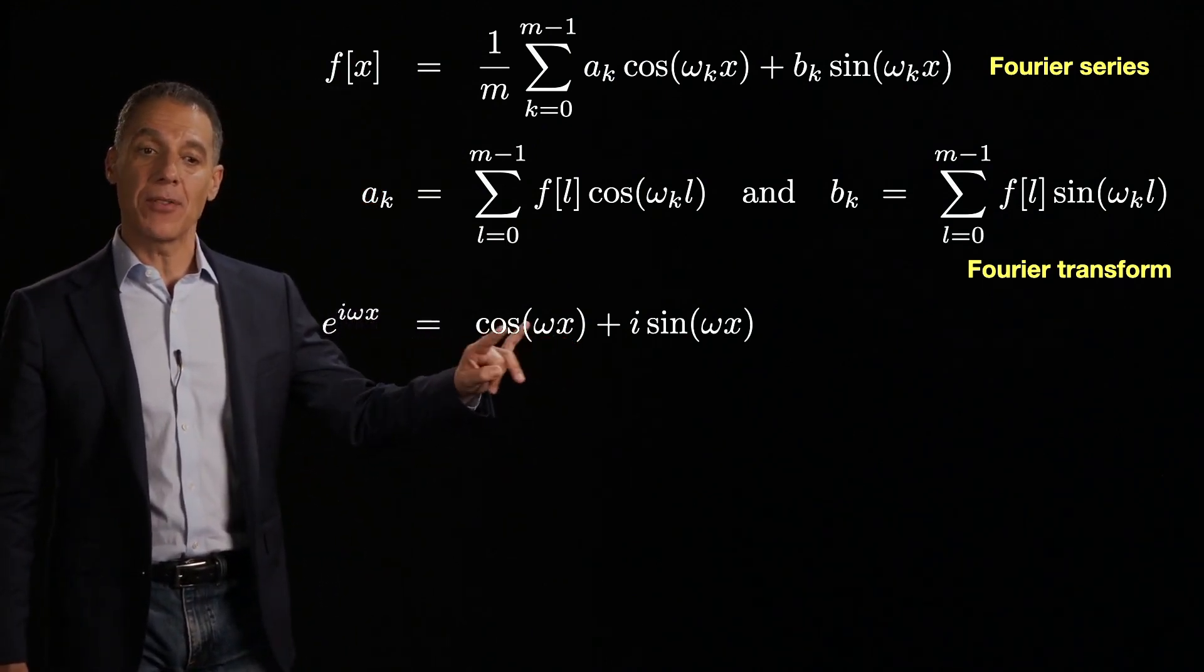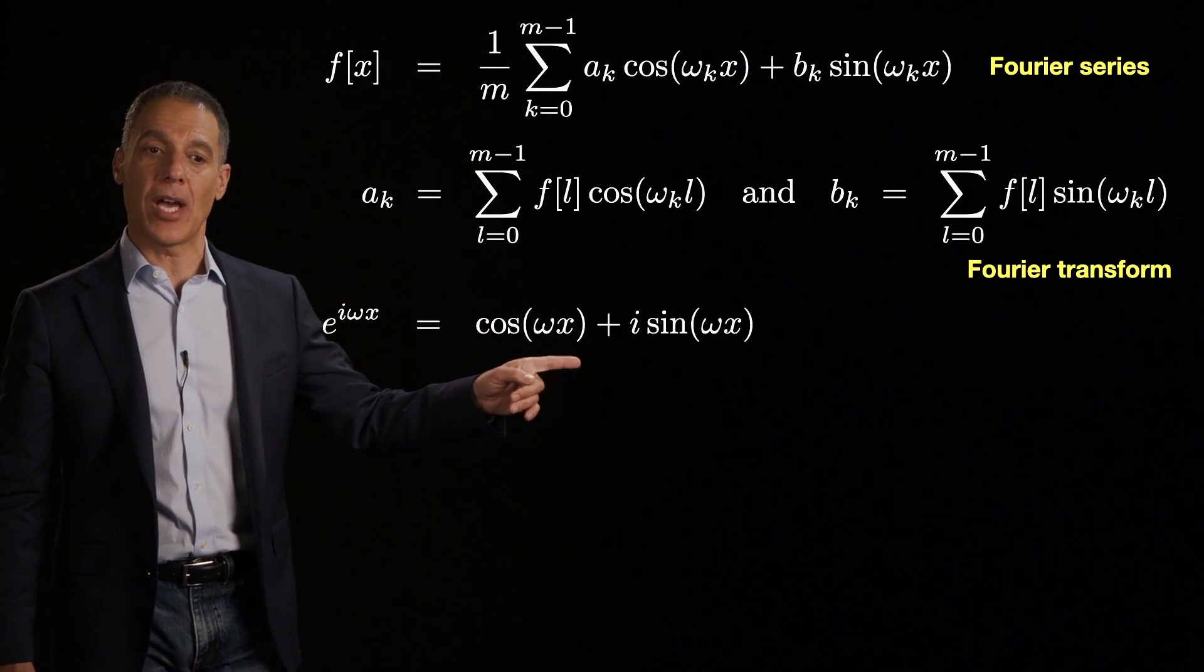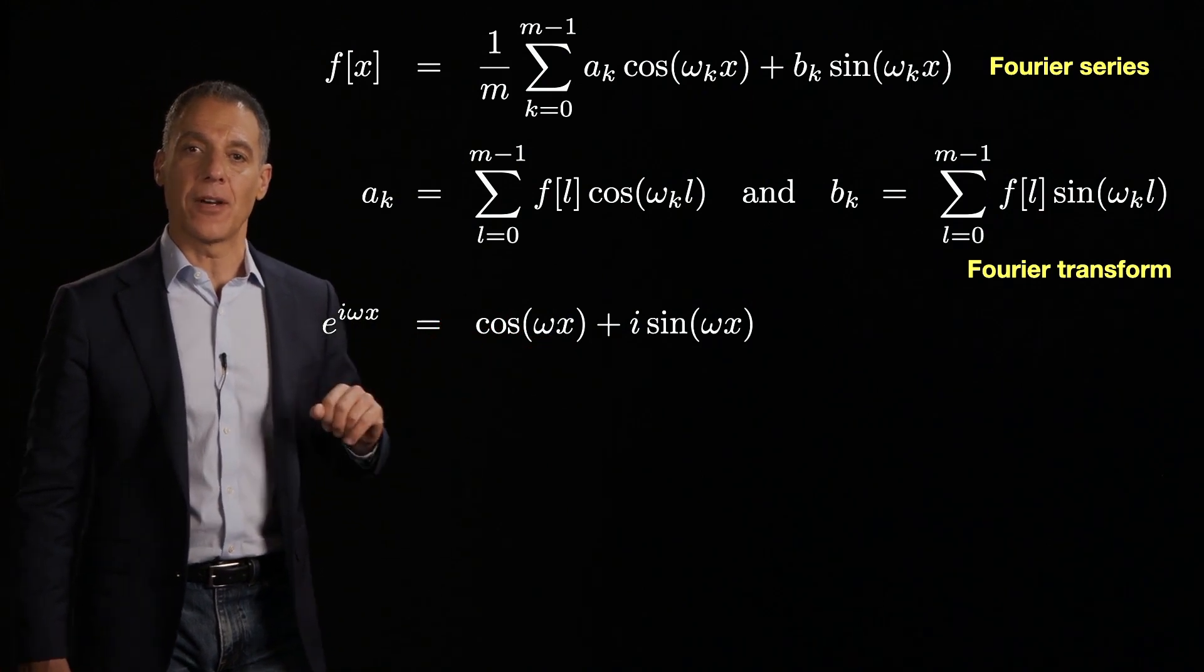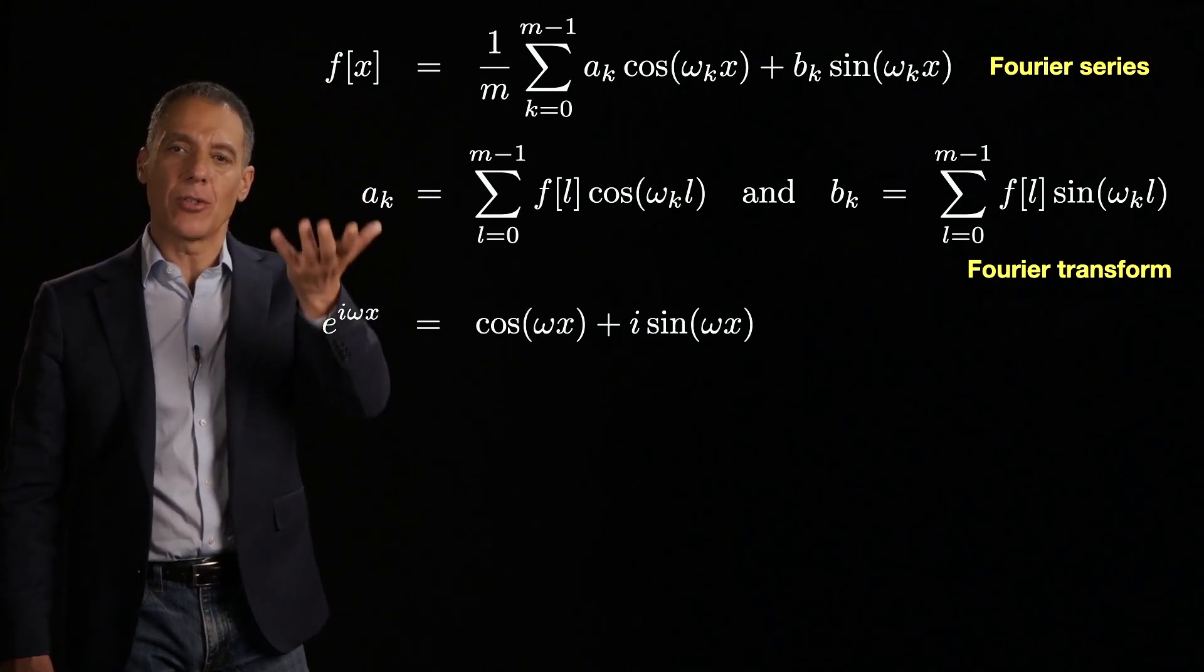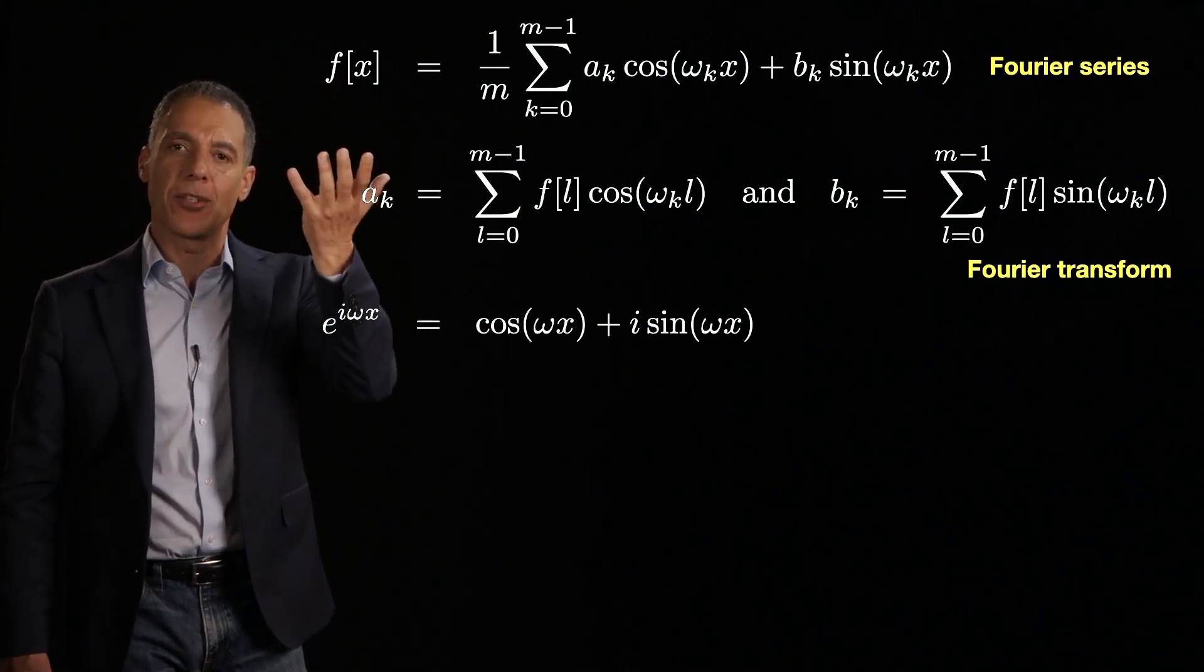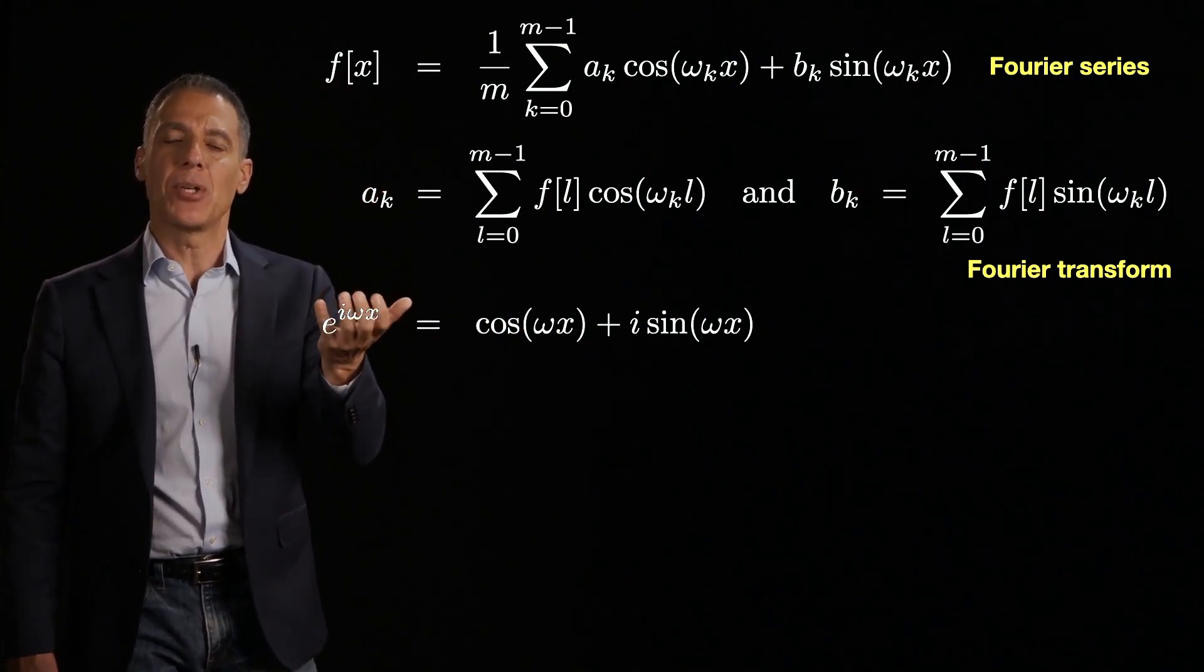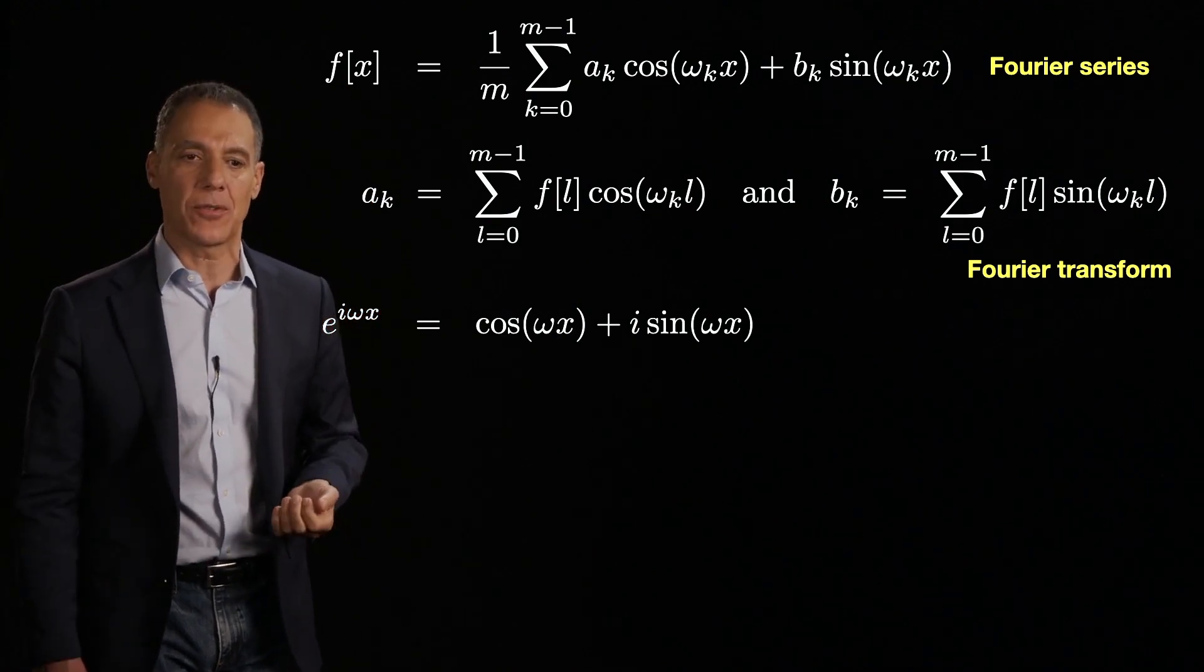e^(iωx) and then the sum of the cosines and the sines. But notice what it does. It bundles up the two things that we care about, the cosine and the sine function. And that was sort of the goal of this, is to stop having to lug around two things.